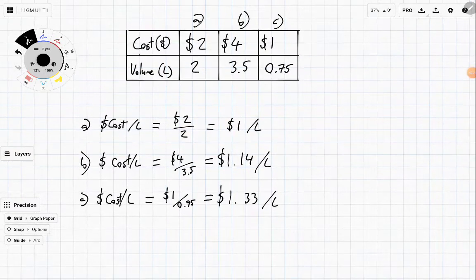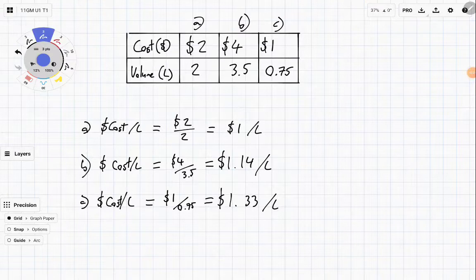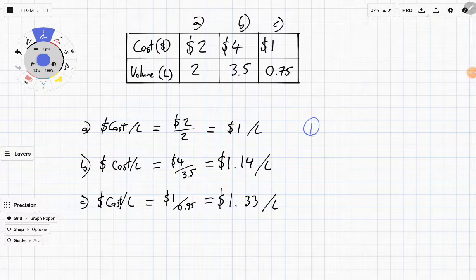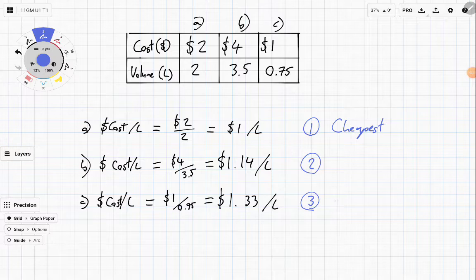And so the ordering of best to worst is first prize goes to A, second prize goes to B, and third prize goes to C for the cheapest and the most expensive. Okay, so that just kind of gives us a way of working through.